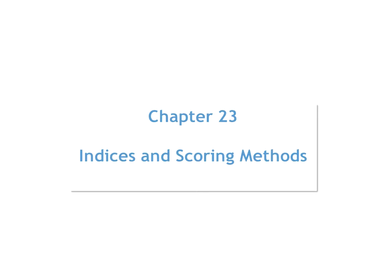Hey everybody, this is Wilkins Chapter 23, Indices and Scoring Methods. You are going to have an entire semester in public health where we'll be talking about these indices and scoring methods for more of a community basis versus an individual patient-based basis. So this chapter is really an overview of what is used out there by clinicians, community practitioners, and researchers as they evaluate indicators of oral health status. We're not going to go into great depth here, but do be familiar with the terminology in Box 23-1.